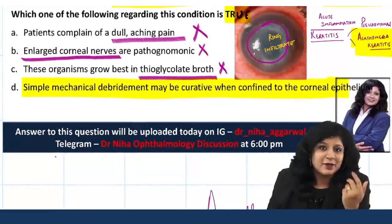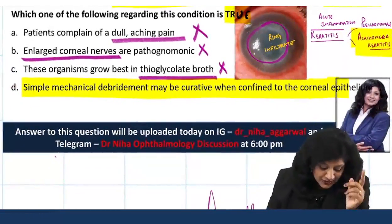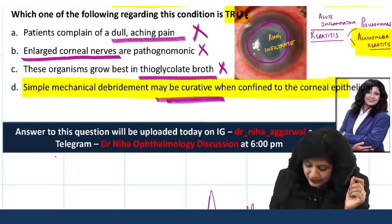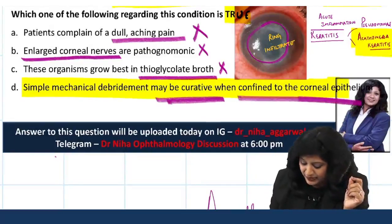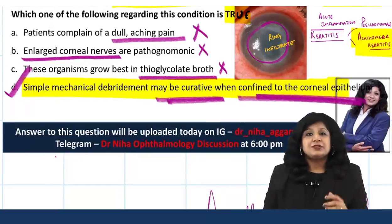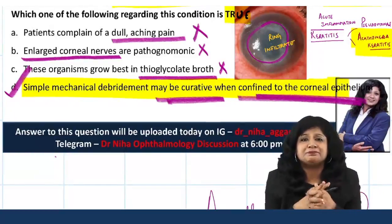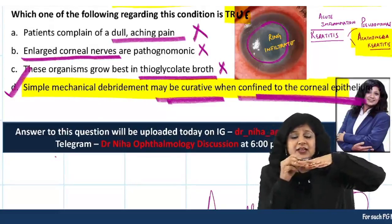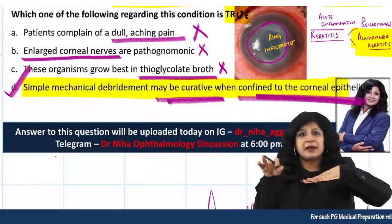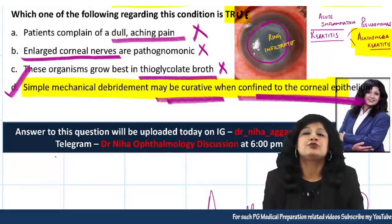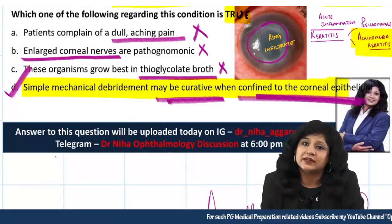Option 4 — simple mechanical debridement may be curative when confined to the corneal epithelium — absolutely correct. If medical management is insufficient and the infection is confined to the epithelium, debridement can be curative. If it has gone to deeper layers, corneal transplantation is required.